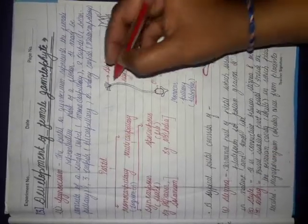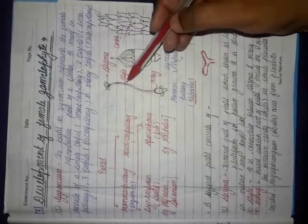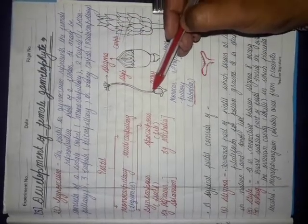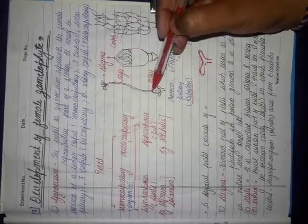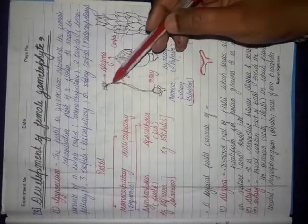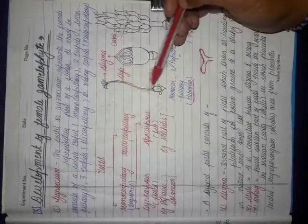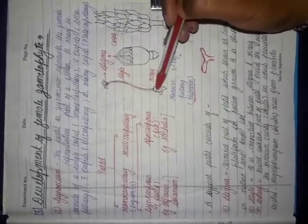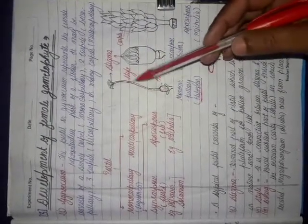Coming to the next part, the style is the cylindrical portion which joins the ovary and stigma. In the case of the gynoecium, it connects the stigma and the ovary. But there is another important function of the style.